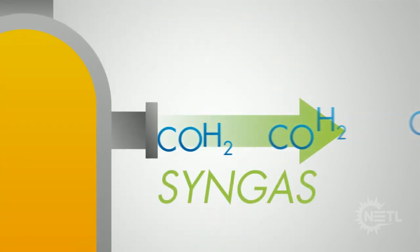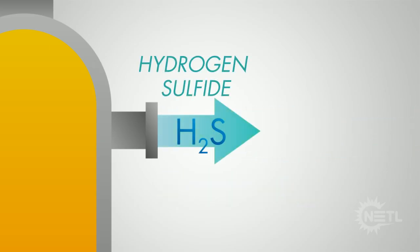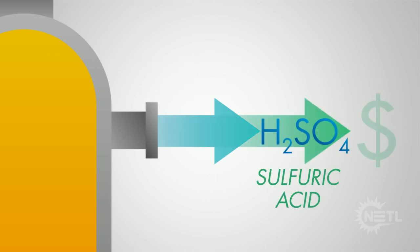The product of gasification is syngas, which is primarily carbon monoxide and hydrogen molecules. The sulfur in coal becomes hydrogen sulfide, which is separated from the syngas and is used to make sulfuric acid, which is then sold.